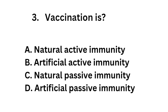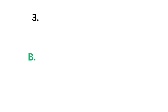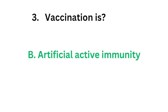Question 3. Vaccination is which type of immunity? Option A, Natural active immunity; Option B, Artificial active immunity; Option C, Natural passive immunity; Option D, Artificial passive immunity.